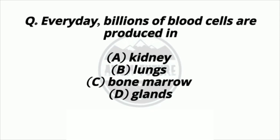Question 6. Every day, billions of blood cells are produced in? Option A: Kidney. Option B: Lungs. Option C: Bone Marrow. Option D: Glands. Answer: Option C — Bone Marrow.